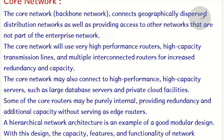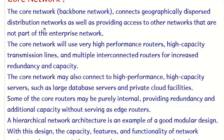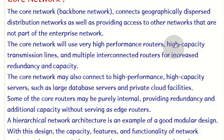The distribution network may also directly connect servers that are of use to multiple access networks, such as database servers and network management servers. The core network — also called the backbone network — connects geographically dispersed distribution networks and provides access to other networks outside the enterprise. Core networks use very high-performance routers due to the high traffic they handle.